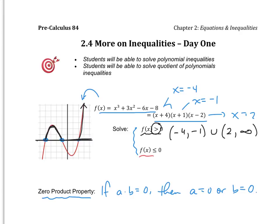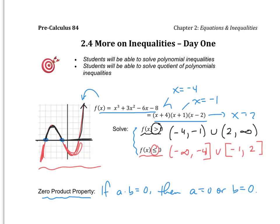The second part: where is it less than or equal to 0, or where is it below the x-axis? It is below the x-axis from negative infinity all the way up to negative 4. I'm going to use a bracket this time because of the equal to. And then it is also less than or equal to 0 between negative 1 and positive 2. We will not always graph it — sometimes we'll just use a number line and determine whether it's positive or negative.